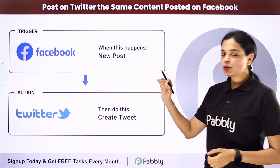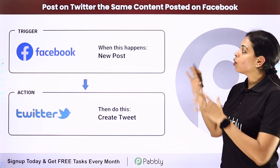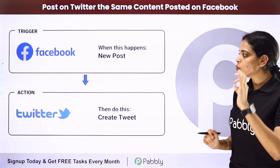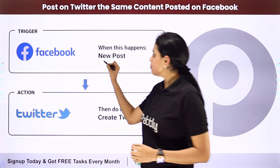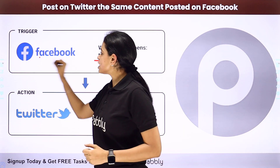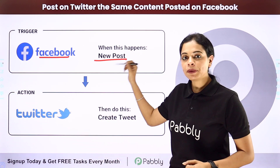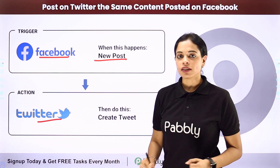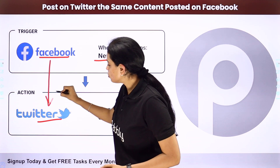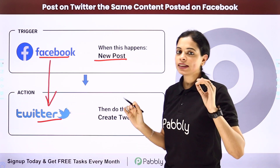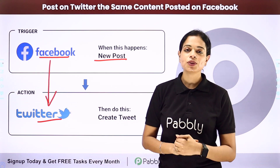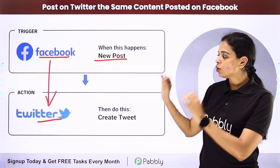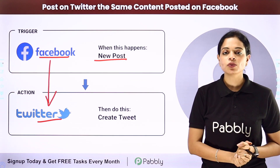In this video we are going to see how to post on Twitter the same content posted on Facebook. So you want that every time a new post is posted on Facebook, the same post should be tweeted on Twitter. For this, some integration has to be made between the two applications, and the same thing can be done using Pabbly Connect software. Here your trigger application would be Facebook and your action application would be Twitter.